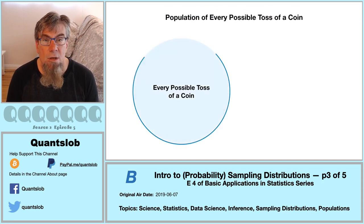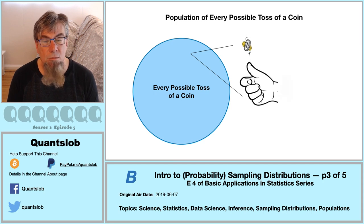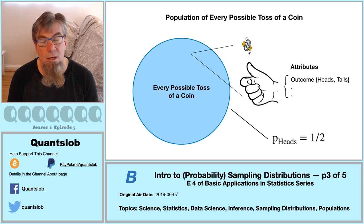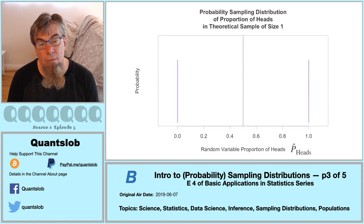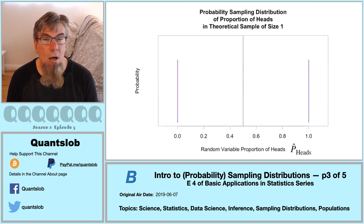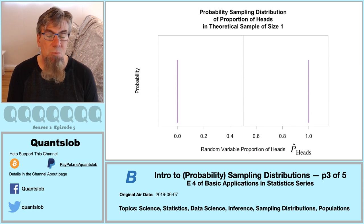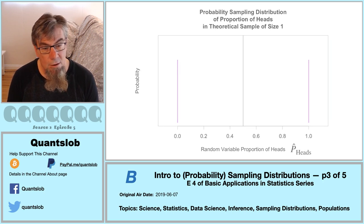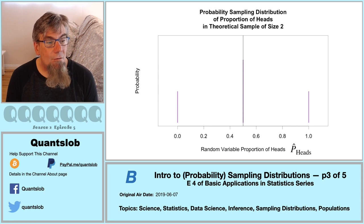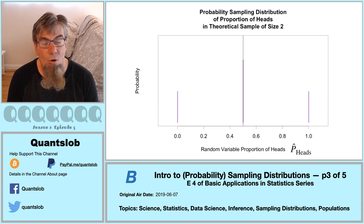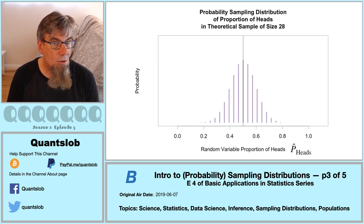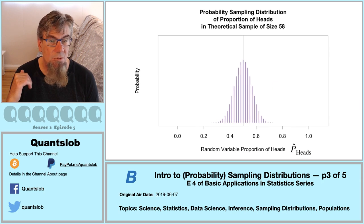For another example, let's consider the infinite imaginary population of every possible toss of a coin. We're going to assert that the population parameter proportion of heads is precisely one-half — we're defining it that way. Here's the sampling distribution of the proportion of heads in a theoretical sample of size one, shown using a line height plot. And we'll take a look at the probability sampling distribution animated for increasing sample sizes all the way up to a sample size of 500.